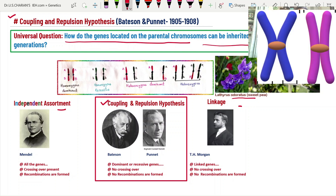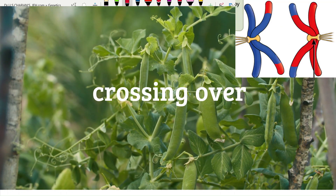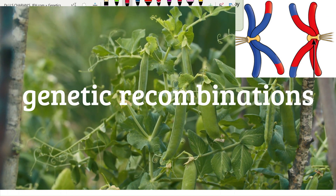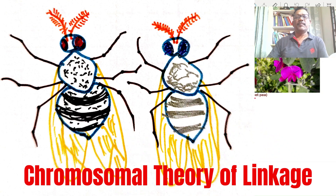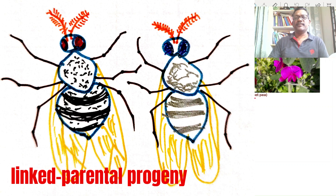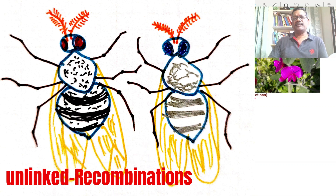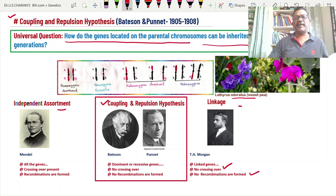Mendel answered the question of how genes on parental chromosomes are inherited with independent assortment — genes are allocated on chromosomes and form new genetic recombinations in the next generation. In linkage, by T.H. Morgan, genes located on one chromosome are linked with each other. Linked genes enter the same gamete; unlinked genes enter different gametes, with no crossing over and no new genetic recombination.